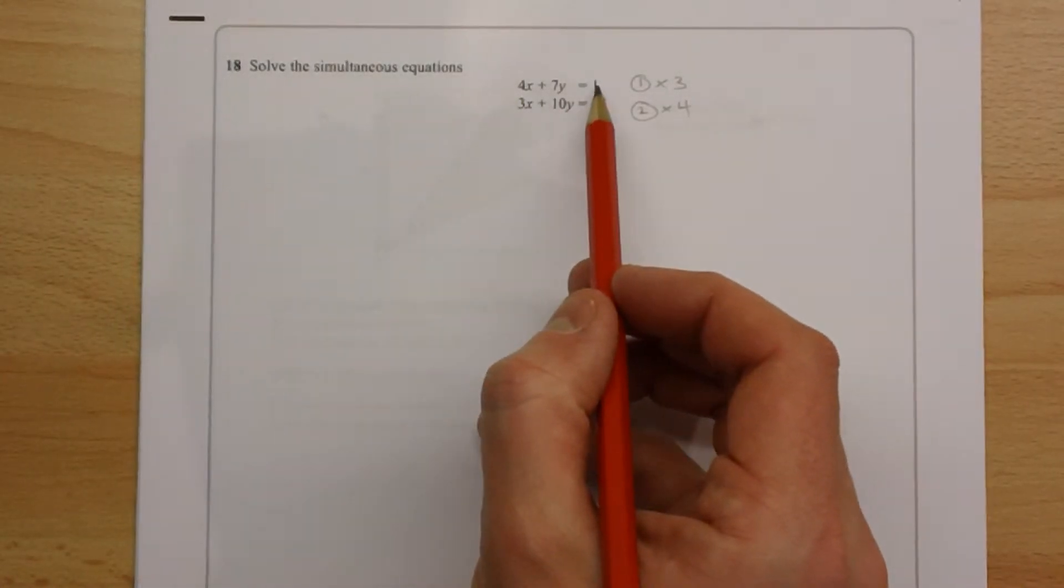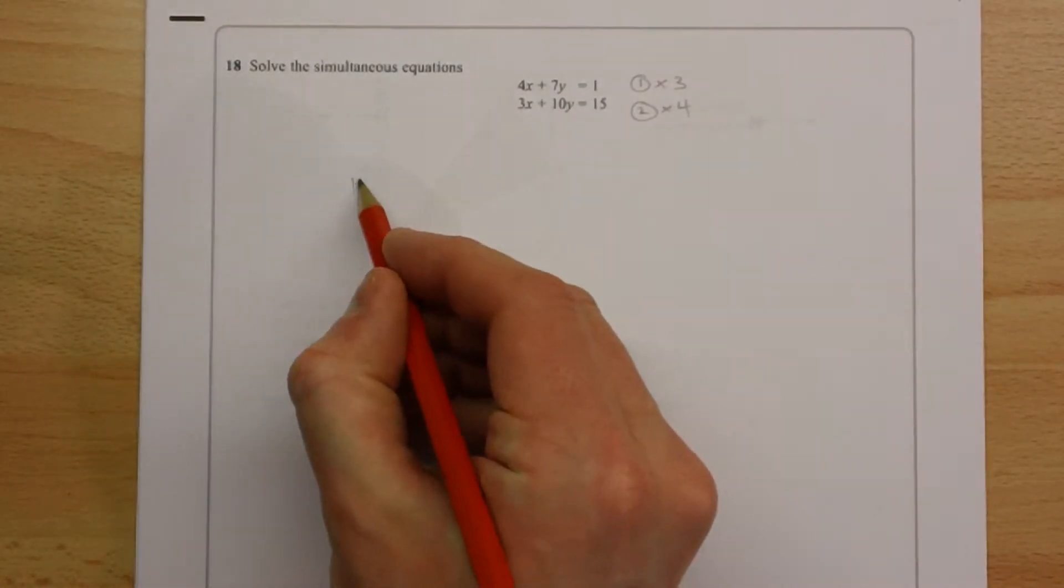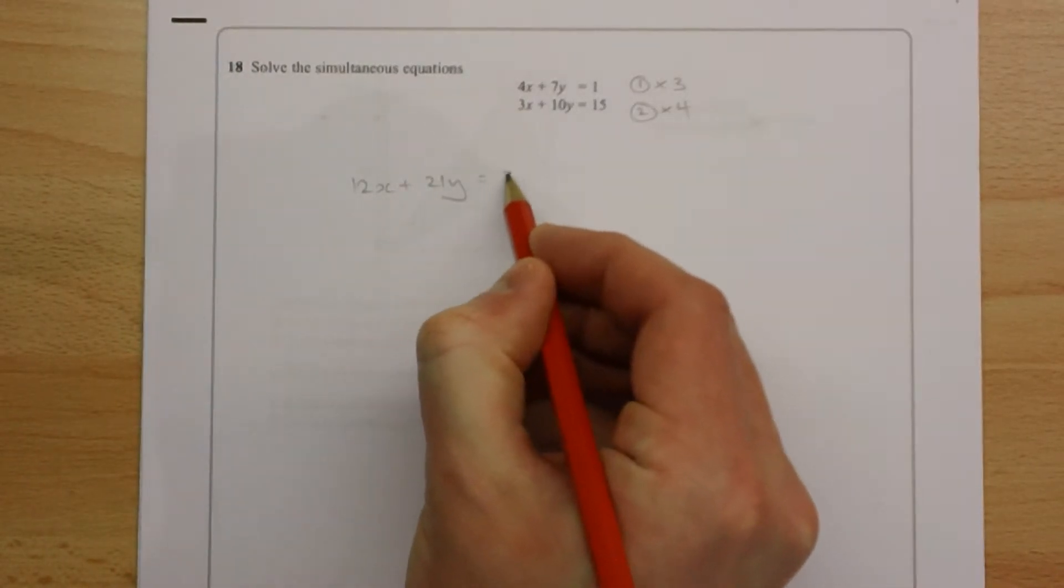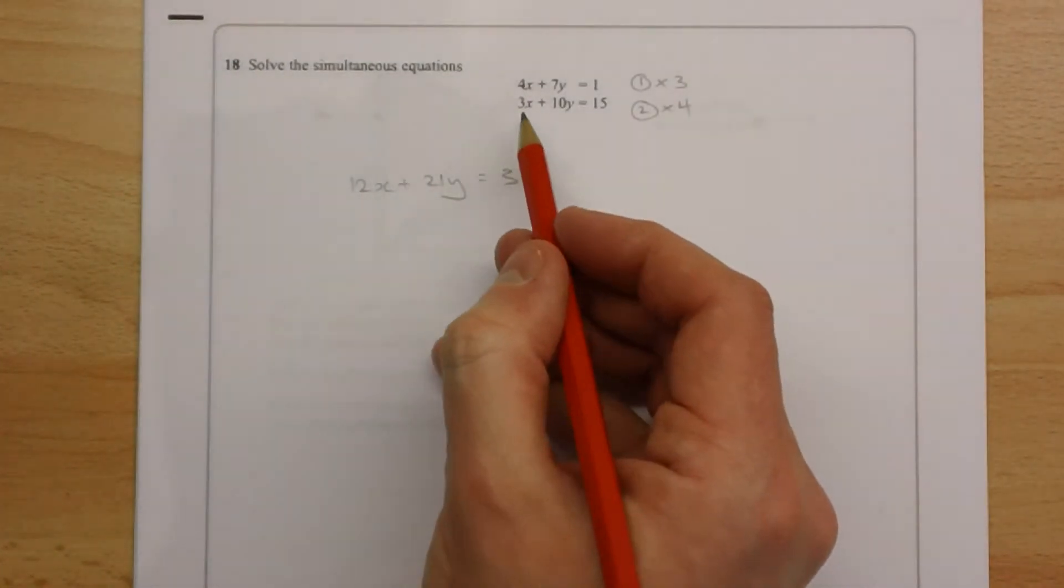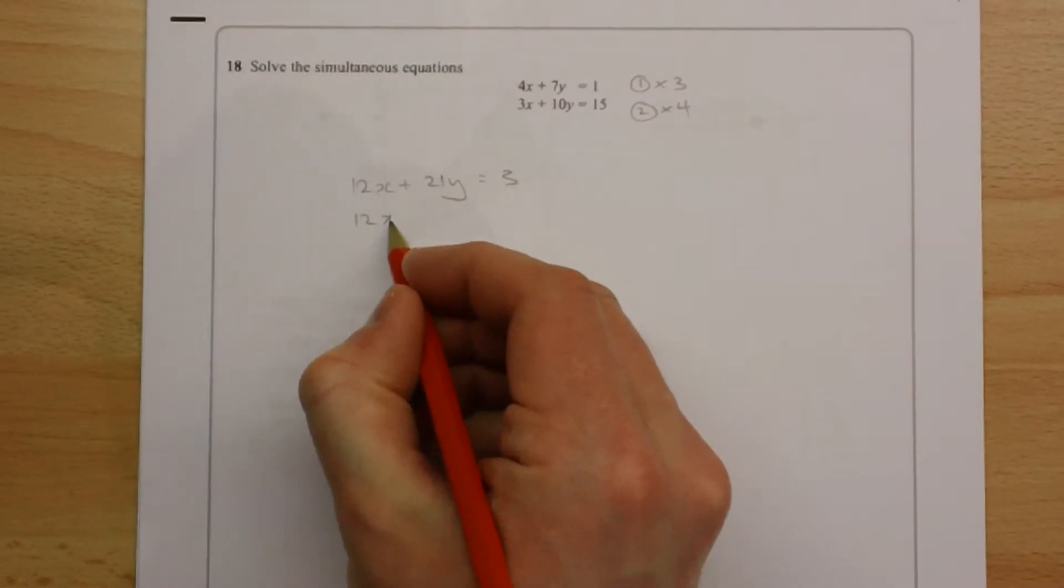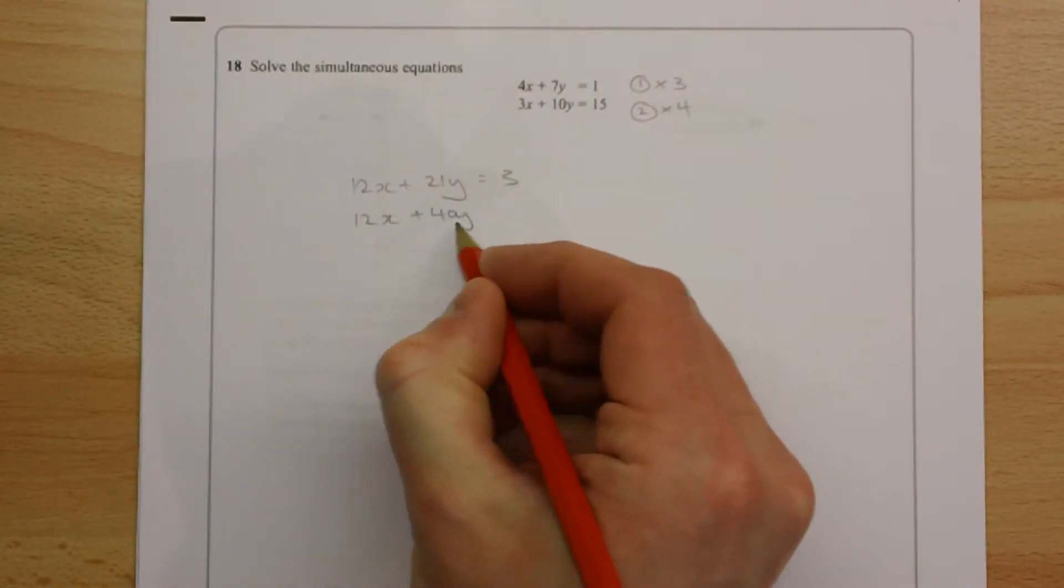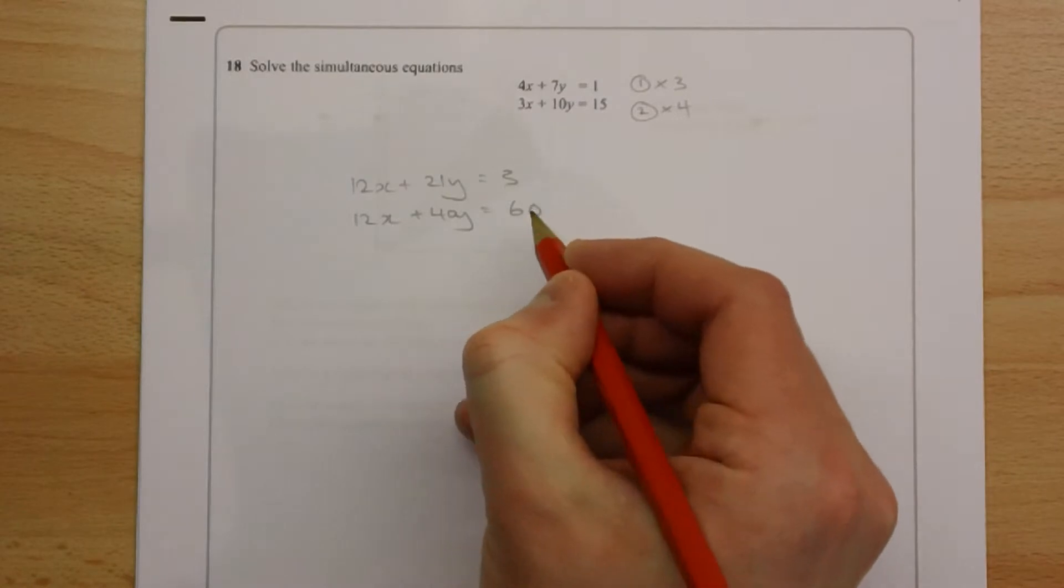So this equation multiplied by 3 gets me 12x plus 21y equals 3. And this equation multiplied by 4 gives me 12x plus 40y equals 60.